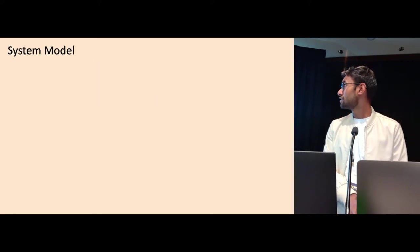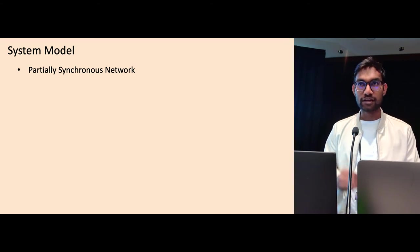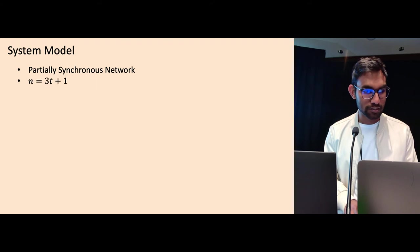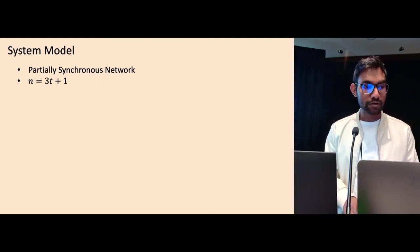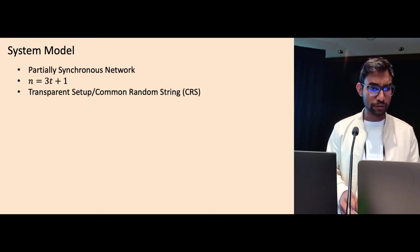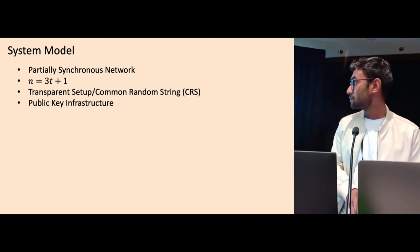This is our system model. We work in partially synchronous network. That means networks which are sometimes synchronous, sometimes asynchronous. We operate in N equal to 3T plus one, where N is the total number of nodes, and T is the maximum number of faulty nodes. We also only require a transparent system or a common random string, and we only assume public infrastructure.